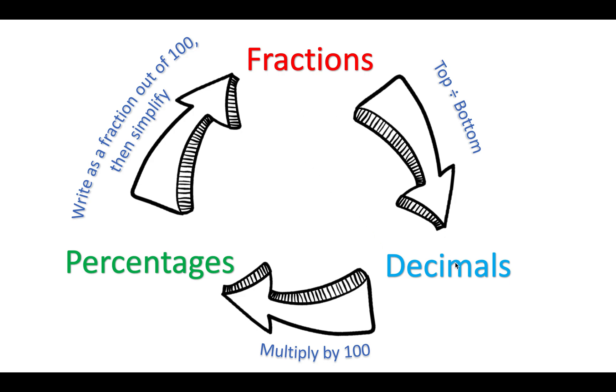To go from fractions to decimals, you divide the top of the fraction by the bottom. To go from decimals to percentages, you multiply the decimal by 100 and add a percentage sign. To go from percentages to fractions, you write as a fraction out of 100, then simplify.